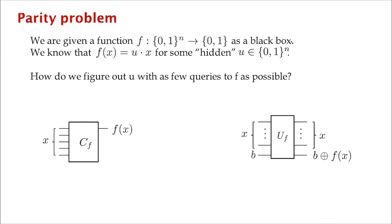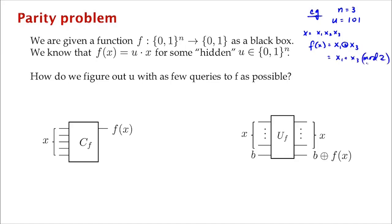This function f has a very special property: it is a parity of some subset of the bits, of the form u·x for some hidden u, which is an n-bit string. For example, n might equal 3, u equal to 1,0,1, in which case on input x1,x2,x3, f(x) is just x1 XOR x3 — that is, x1 + x3 mod 2. What we mean by u·x is u·x mod 2.